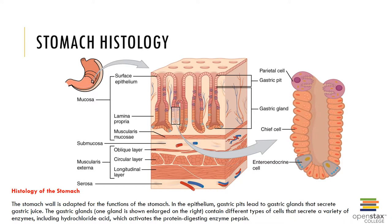Parietal cells secrete hydrochloric acid for activating pepsinogen, and an intrinsic factor important in the absorption of vitamin B12. G cells are enteroendocrine cells that produce a variety of hormones important in the digestive process. Some hormones produced include gastrin, which increases stomach motility and churning; histamine, which stimulates the release of hydrochloric acid from parietal cells; endorphins, a natural opiate that gives a feeling of fullness; and somatostatin, which inhibits stomach motility and emptying.